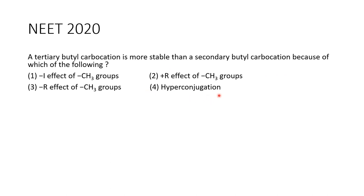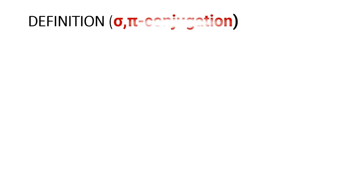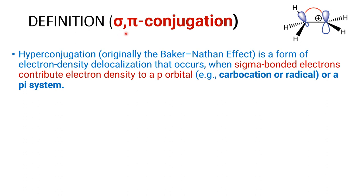You must know what is hyperconjugation and how carbocation stability is arranged with respect to hyperconjugation. Hyperconjugation is defined as sigma-pi conjugation — it is an electron delocalization from the sigma bonded electrons to the pi bonded electrons. In other words, from an sp3 hybrid orbital, electrons are delocalized to a vacant p orbital on the carbocation, radical, or pi electron system.